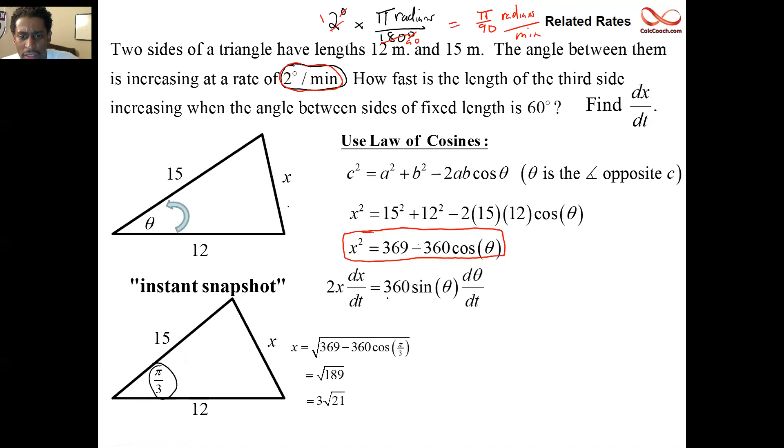So, our job is to find this. Who are our players? We can write a catalog. There's an x, and there's a theta, and then there's a dx/dt, and there's a dθ/dt. And we are looking for dx/dt. That's our mystery. Our job is to find this exactly at the moment when x is 3√21, when theta is π/3, and when dθ/dt is π/90.